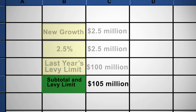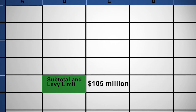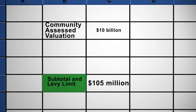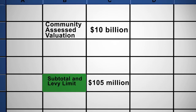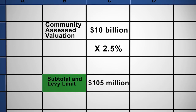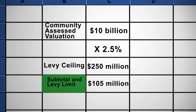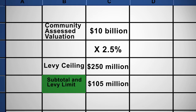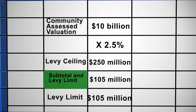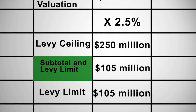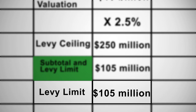For illustration purposes, the assessed valuation of the community this year is $10 billion. Multiplying that amount by two and a half percent equals a levy ceiling of $250 million. Clearly, our subtotal of $105 million is below our levy ceiling and therefore the community's levy limit is $105 million.